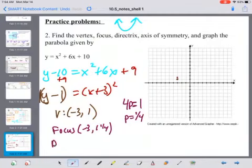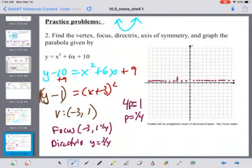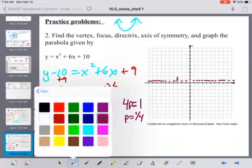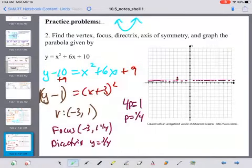My directrix will go 1 fourth of a unit down, which will put it at y equals 3 fourths. My axis of symmetry will go right through the vertex at x equals negative 3.